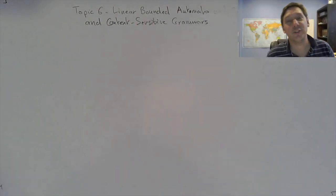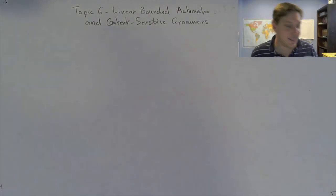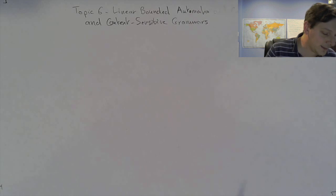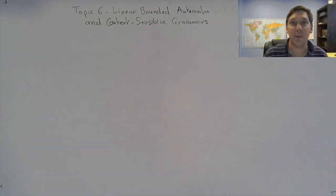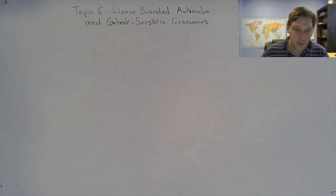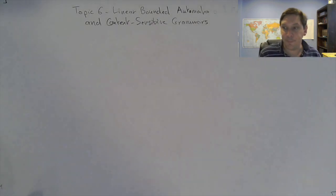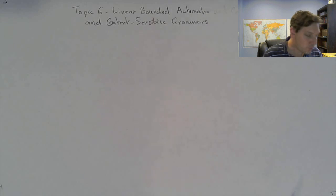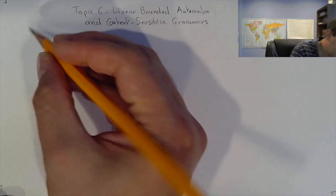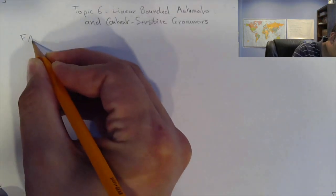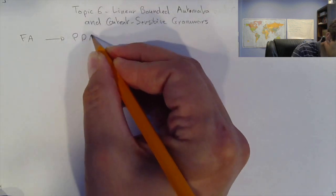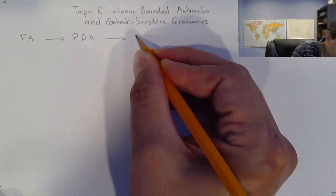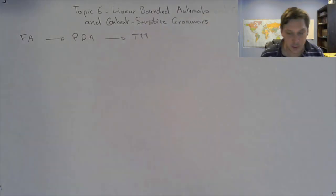Our topic of discussion today is topic six: linear bounded automata and context-free grammars. First, let's set up a little bit of context with what we've looked at so far. We have studied finite automata and pushdown automata and then, more recently, we just saw Turing machines.